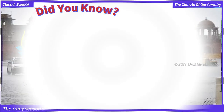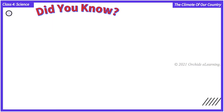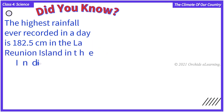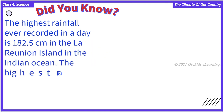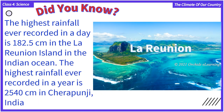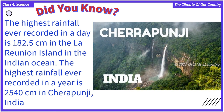Did you know? The highest rainfall ever recorded in a day is 182.5 centimeters, recorded at La Réunion Island in the Indian Ocean. The highest rainfall ever recorded in a year is 2,540 centimeters, recorded in Cherrapunji, India.